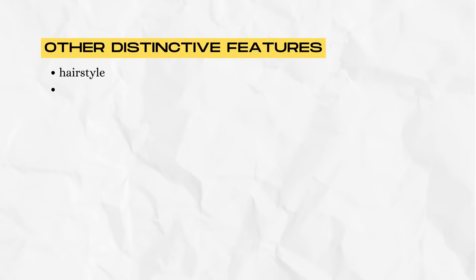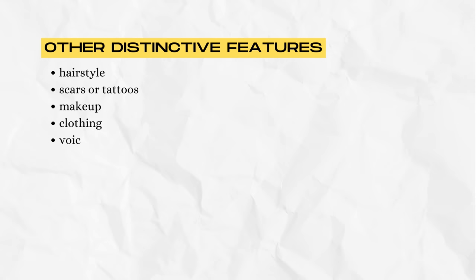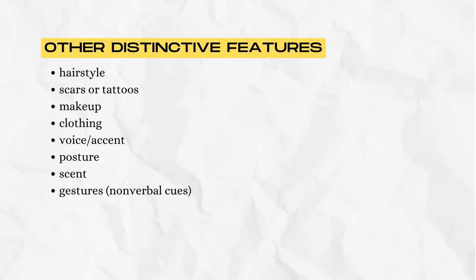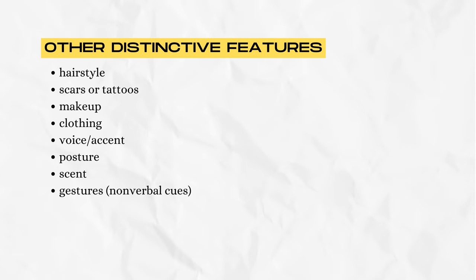You can also use other distinctive features about a character to show us not just what they look like, but who they are — maybe their history, their backstory, where they're from, or something about their personality. Those things can be hairstyle, scars or tattoos, makeup or the lack thereof, clothing and fashion style, voice or accent, posture, scent, and gestures or nonverbal cues. Body language can say a lot about who they are as well.